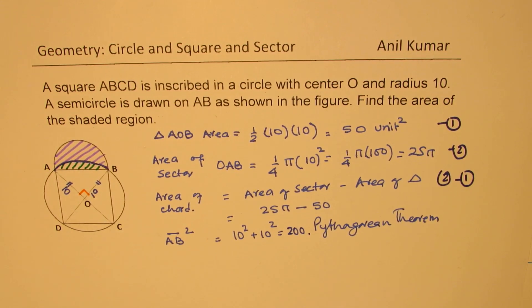So we get AB². You could find square root of 200 also to find AB. But since you know πr² is the area of the circle, we'll use the square term itself, okay?